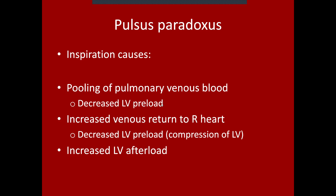In addition to reduced preload, there's less space for the LV to fill during this cardiac cycle. And because of the higher negative pressure in the chest, you have increased left ventricular afterload — the LV has a harder time contracting, essentially pulling against a negative pressure vacuum during inspiration. These three things together cause high variation in cardiac output depending on where you are in the respiratory cycle.